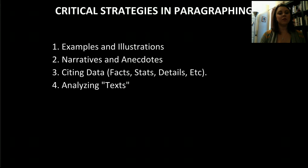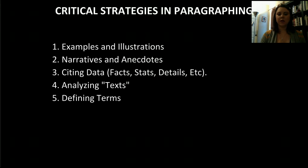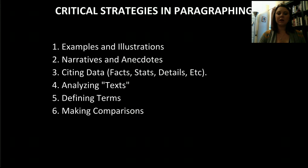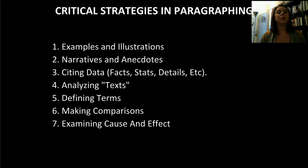Number four is analyzing text. In this class we define text very broadly — video games are text, and even the videos you are watching are considered text. Any text you want to analyze can be brought in, always working to tie it back to the topic sentence. Number five is defining terms. You may need to define terms using denotative definitions — dictionary definitions for audiences unfamiliar with a term — or connotative definitions, for when the audience knows the word but it has a vague meaning, such as the word 'home,' which means something different to each of us. Number six is making comparisons, and finally, number seven is examining cause and effect. The whole goal is to create a critical structure by which you are proving your paragraph and your topic sentence.